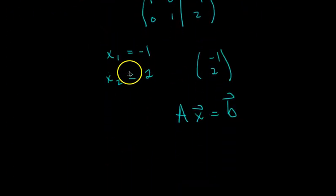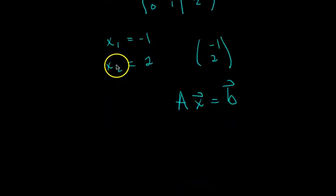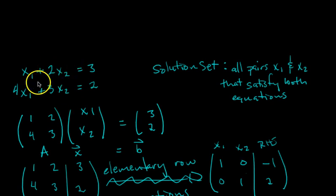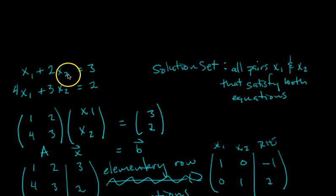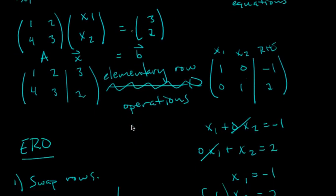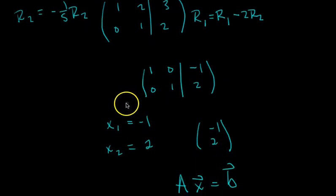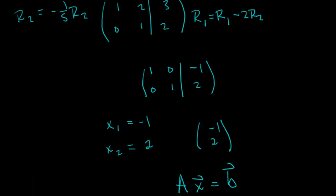You can verify by plugging x1 = −1 and x2 = 2 into the original system — assuming we did everything right, the system will be satisfied. In the next video, we'll drill some row operation questions, and I'll show my technique so you can do it as quickly as possible.